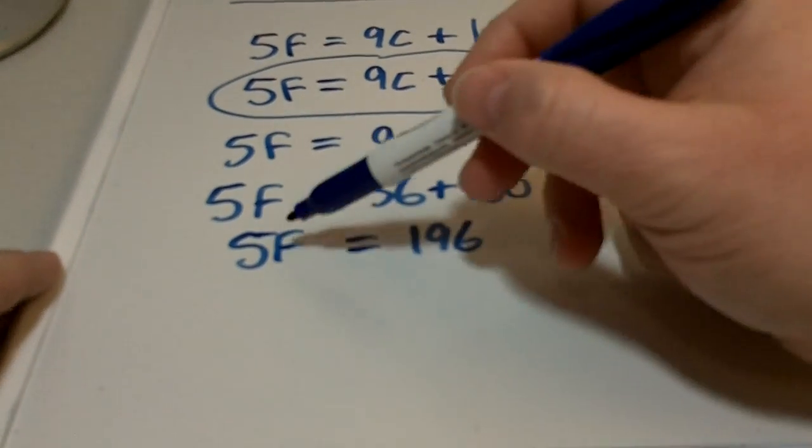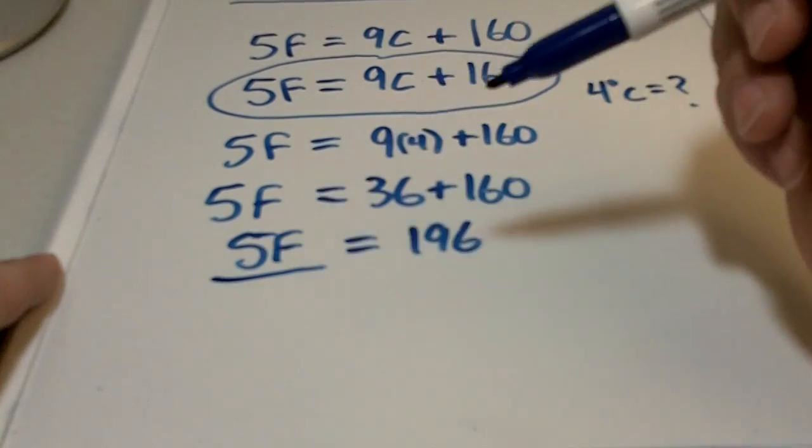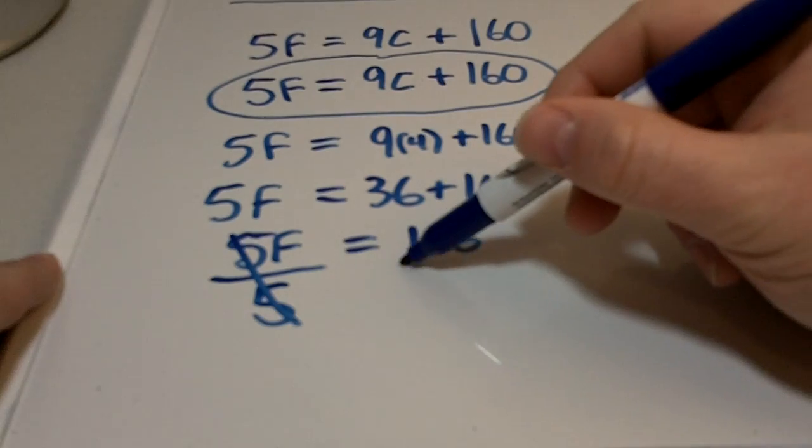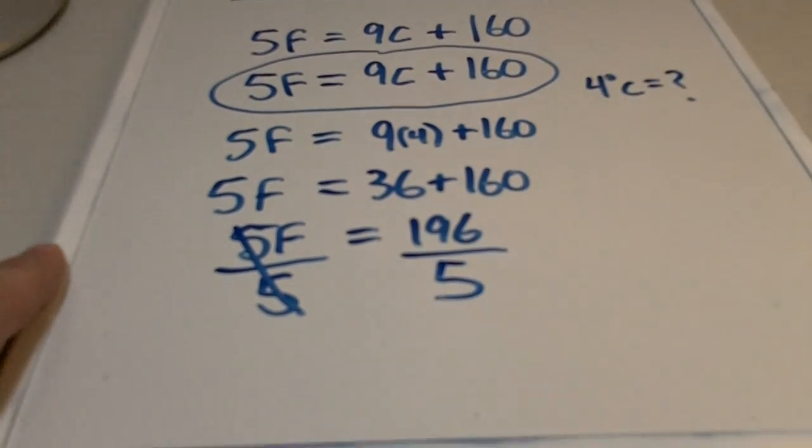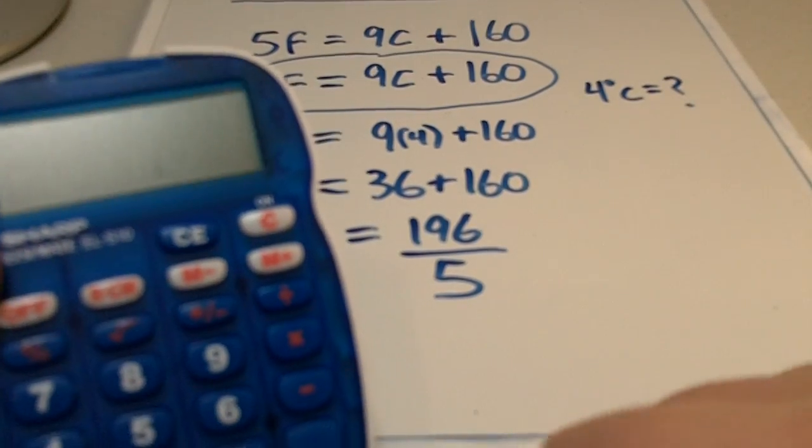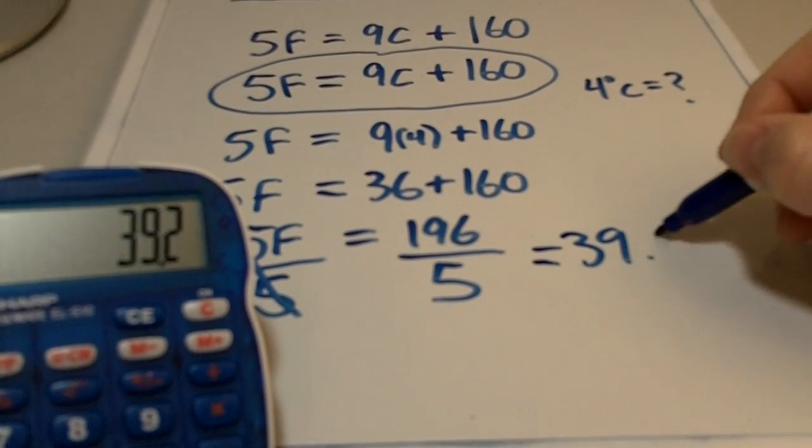To isolate F, we need to divide by 5 so that the 5s cancel. But as you know, it's an equation, so we have to do that on both sides. That's going to give us our answer: 196 divided by 5 equals 39.2.